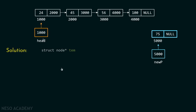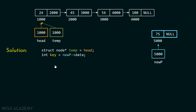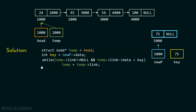Now let's consider the solution. First, we will declare a temp pointer pointing to the first node of the list so we can traverse it. I have declared a key variable which holds the data of the new node — in this case 75. Then we need this piece of code: while temp->link is not equal to null and temp->link->data is less than key, set temp equal to temp->link. This is the whole logic for traversing the list.